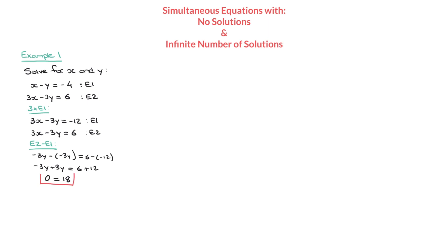At this stage we stop. We've reached something which seems absurd: 0 equals 18. Clearly, 0 isn't equal to 18, and we have a mathematical contradiction. When that happens, it means there are no solutions to this pair of simultaneous equations.